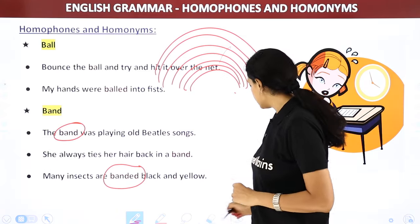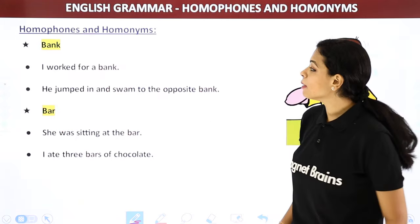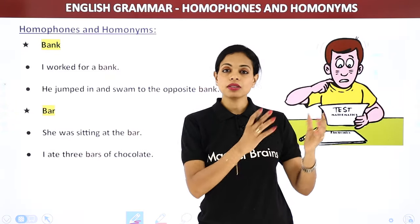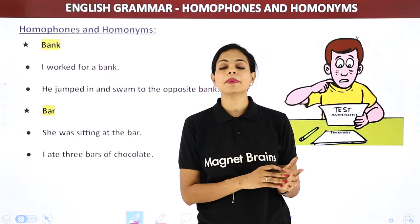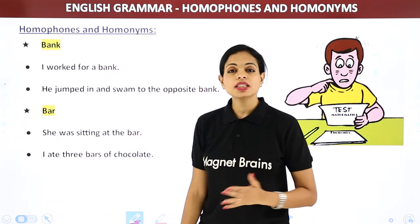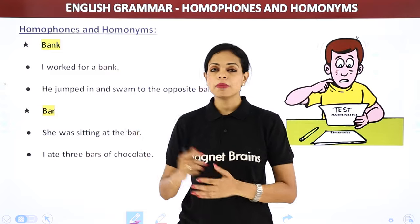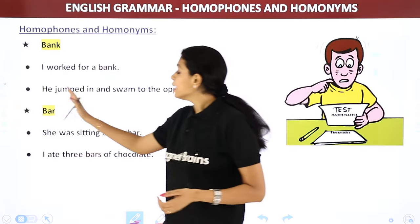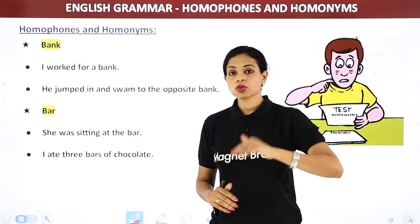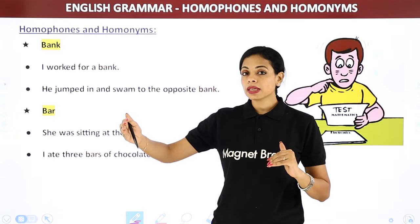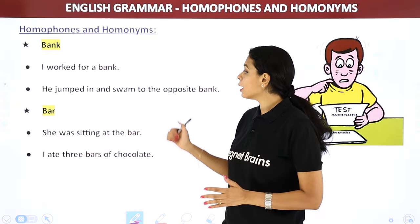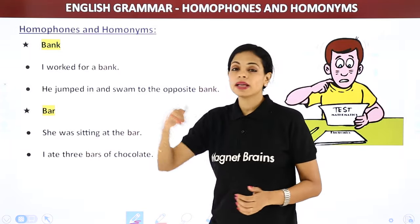Next: 'bank.' We have already seen this — 'I worked for a bank' (financial institution like RBI or SBI), and 'he jumped in and swam to the opposite bank' (the bank/edge of a river). One is a place for money, the other is the boundary of a river.